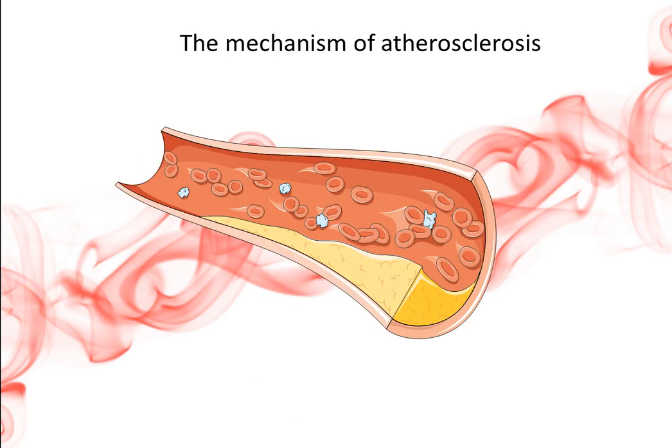Since Ross proposed atherosclerosis is a chronic inflammatory disease, it has been widely recognized in academia. The research mainly focuses on inflammatory cells, cytokines, adhesion molecules, and the interaction of oxidative stress and immune mechanisms. It is currently believed that inflammation and immunity are the most important mechanisms of atherosclerosis and participate in all stages of the development of lesions.